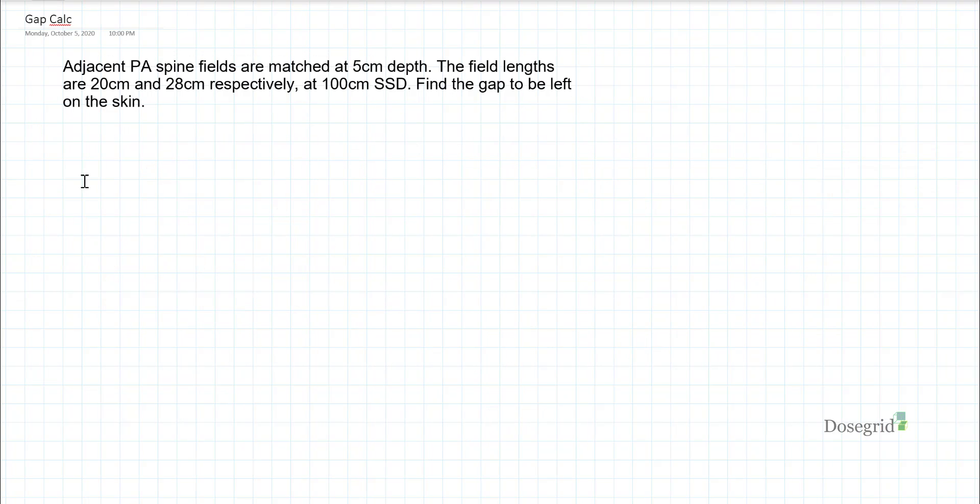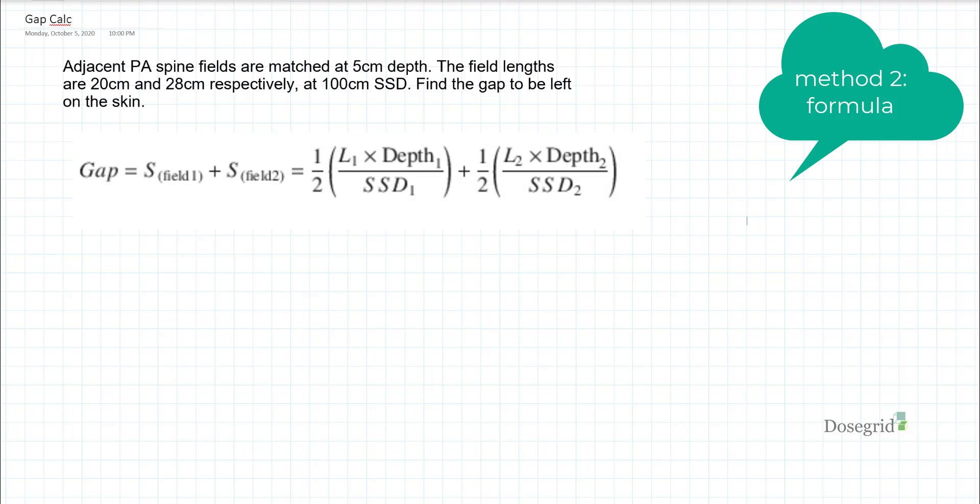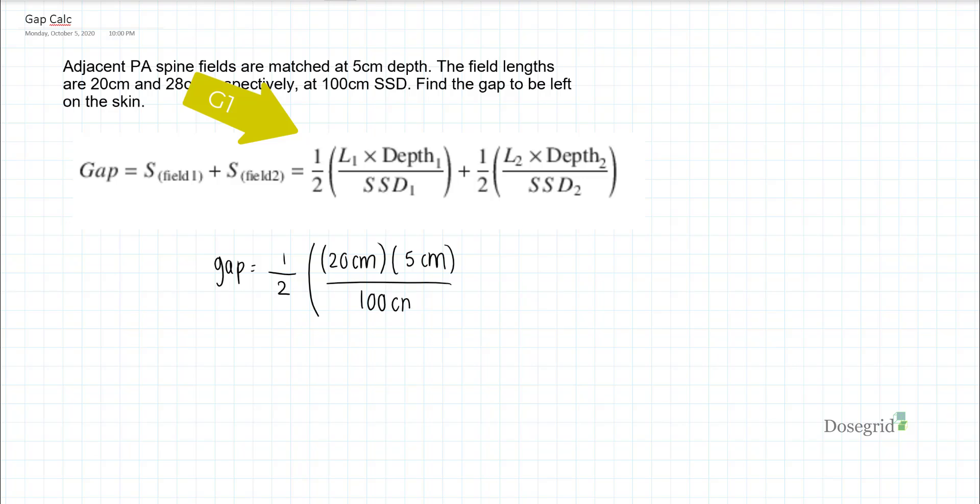Another way to solve gap calculations is with a formula. As you can see below, you can plug in the values, and it basically gives you G1 and G2. One half of 20 cm times 5 divided by 100 plus one half of 28 times 5 divided by 100.